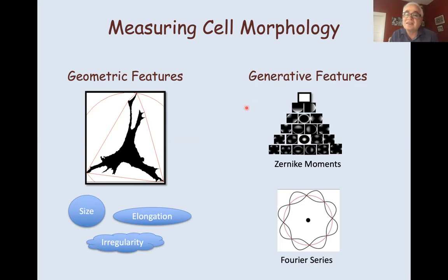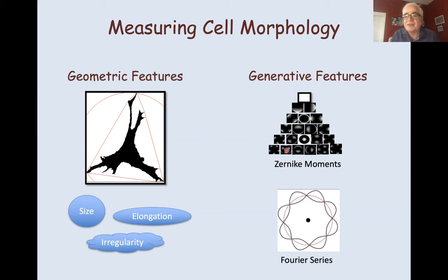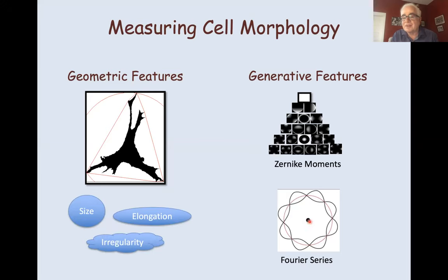We use two kinds of generative features. You can think of the image of the cell on a surface as essentially a two-dimensional function, and you can expand it in some kind of basis set. We use a two-dimensional basis set called Zernike moments. We also use Fourier series — specifically we form a position vector of the perimeter starting from the center of mass of the cell, represent the coordinates in polar coordinates R and theta, then transform R and theta in a Fourier series. We find this works really well in representing cell shape.